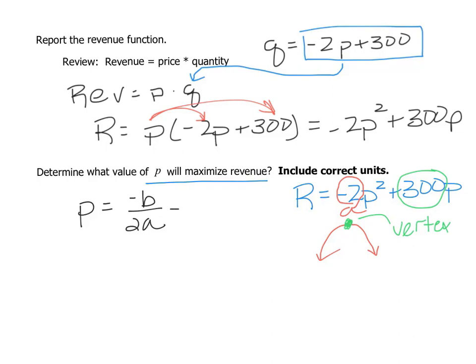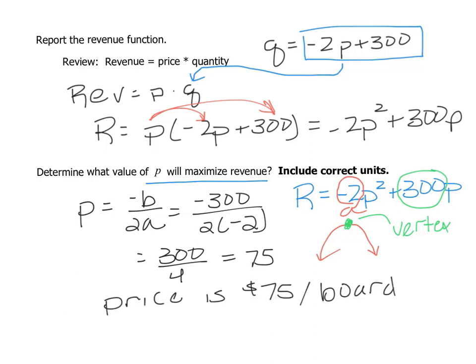So we are going to have negative 300 over 2 times negative 2. This is 300 over 4 which is 75. Our price is going to be $75 per surfboard. That's where our revenue is maximized.